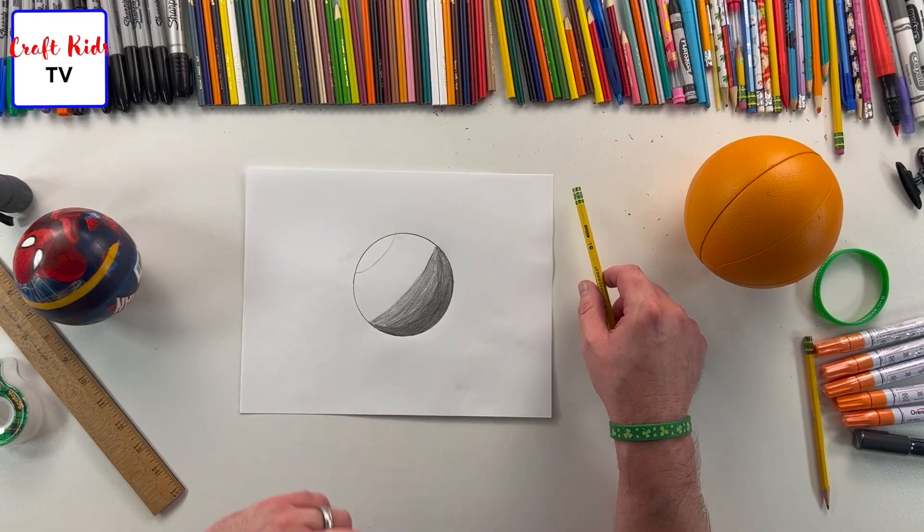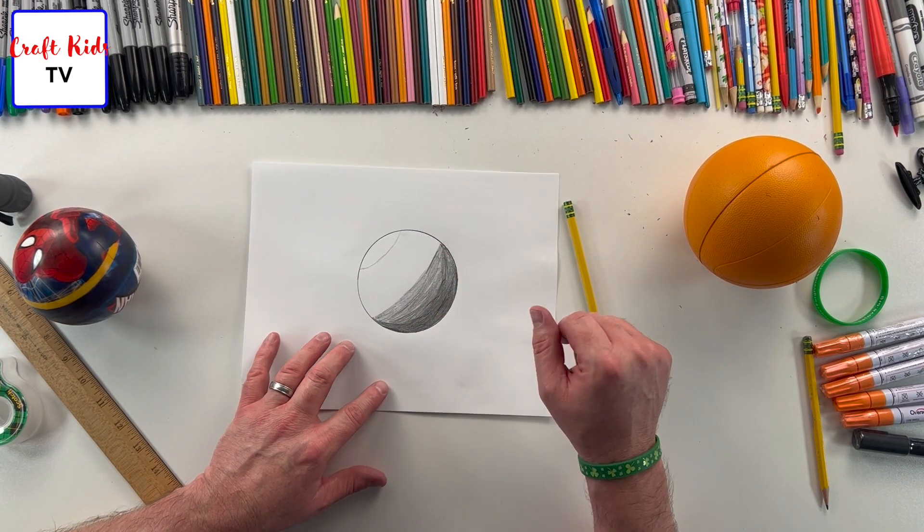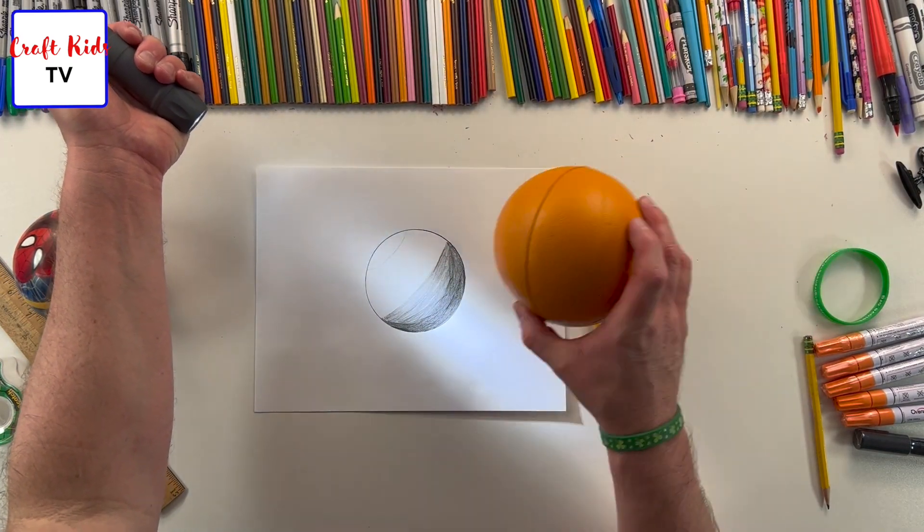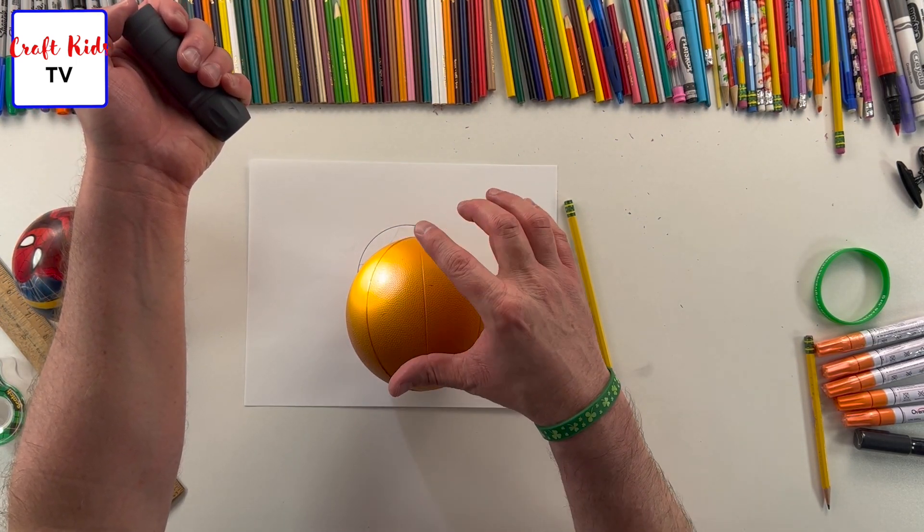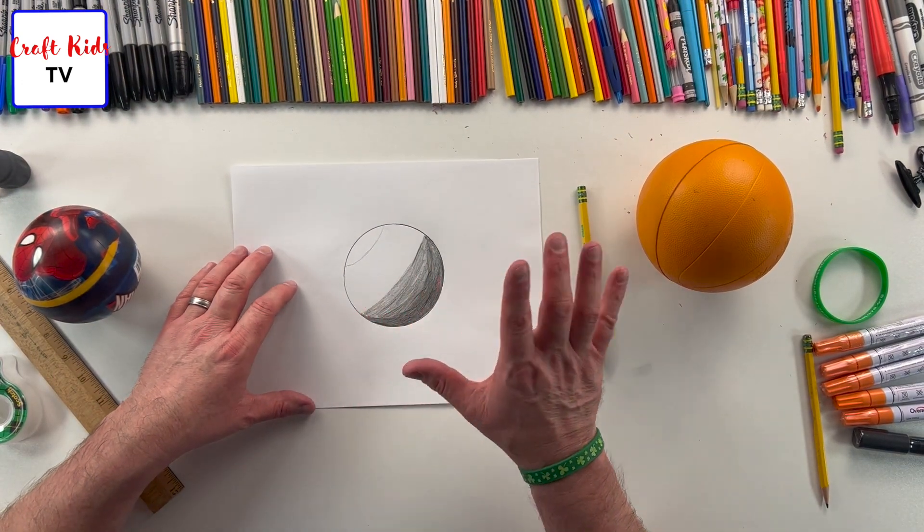One thing I want to note is that there's not a hard line here. Right now it's a pretty hard line, but that's not how light works. When we shine it on a ball, you can't see any real hard lines. It's a soft one.